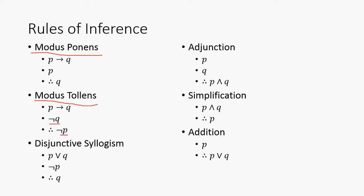Disjunctive syllogism: P or Q, not P, therefore Q. That's also a good one. Adjunction, this is kind of illustrating the point that each line of a proof is kind of being anded together. So, P, Q, therefore P and Q is adjunction.